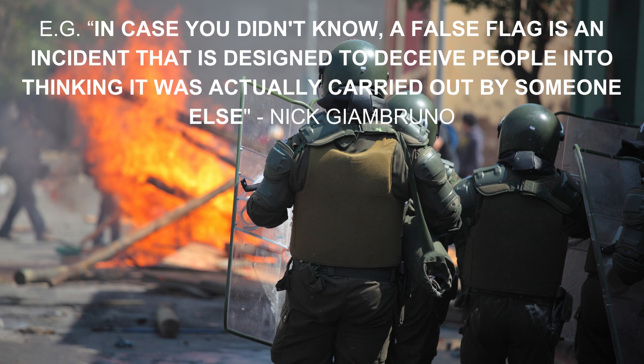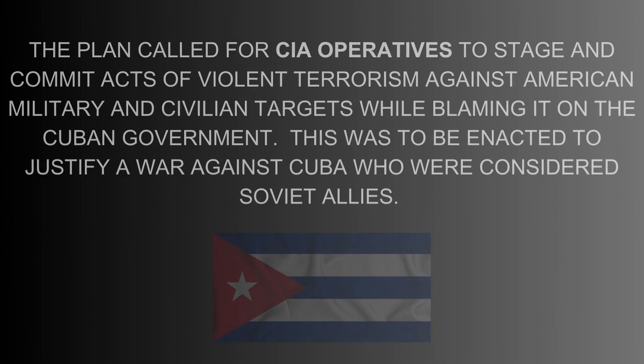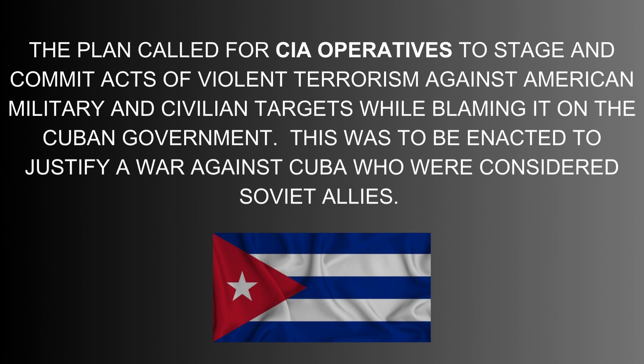Operation Northwoods was proposed as a false flag operation against American citizens, drawn up within the U.S. Department of Defense in 1962. The plan was drafted by the Joint Chiefs of Staff, signed by Chairman Lyman Lemnitzer, and sent to the Secretary of Defense. The plan called for CIA operatives to stage and commit acts of violent terrorism against American military and civilian targets while blaming it on the Cuban government — to justify a war against Cuba, who were considered Soviet allies.